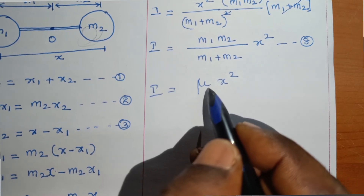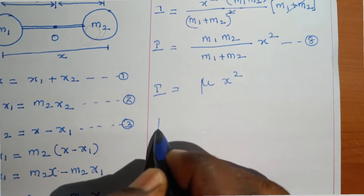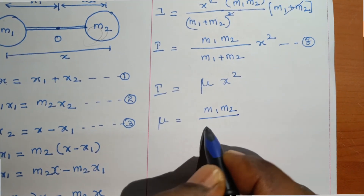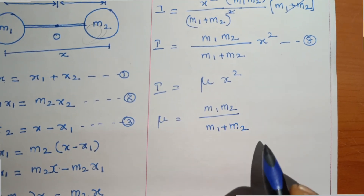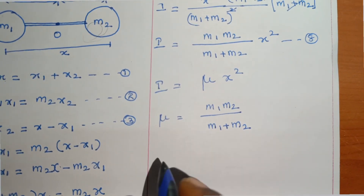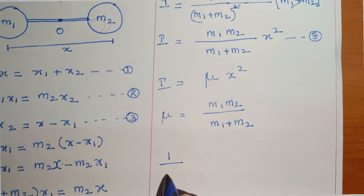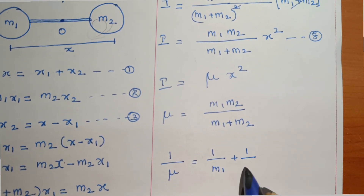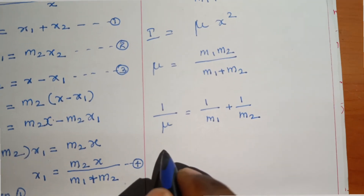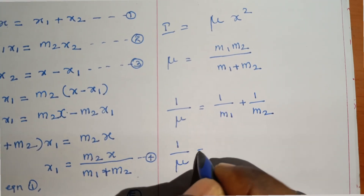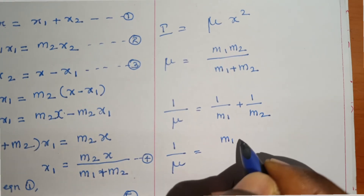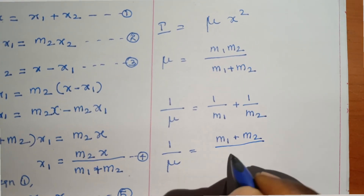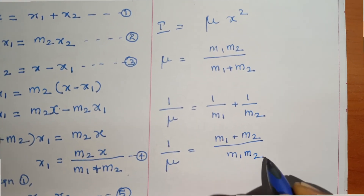Here mu is the reduced mass of the system, where mu equals m1·m2 divided by m1 plus m2. Also, 1/mu equals 1/m1 plus 1/m2.